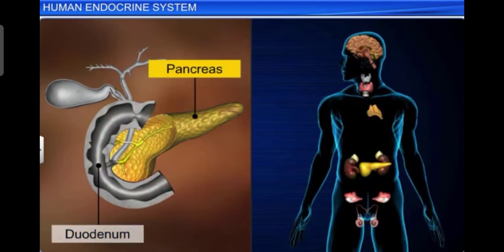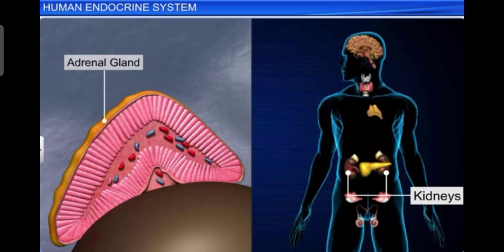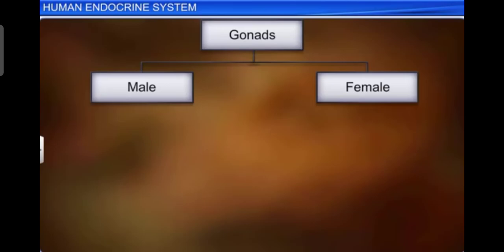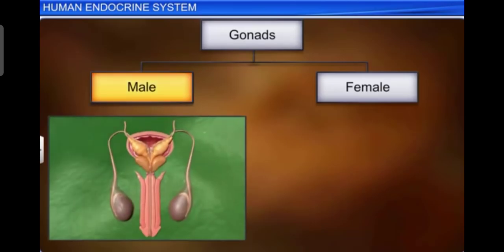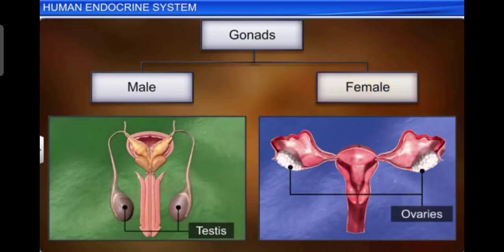In the loop of the duodenum there is the pancreas, which is a composite or heterocrine gland that acts as both an exocrine and endocrine gland. The adrenal gland is situated at the anterior part of the kidney — one pair of adrenal glands. The gonads consist of a pair of testes in males and a pair of ovaries in females. These are also heterocrine glands because they function both as primary sex organs and as endocrine glands.